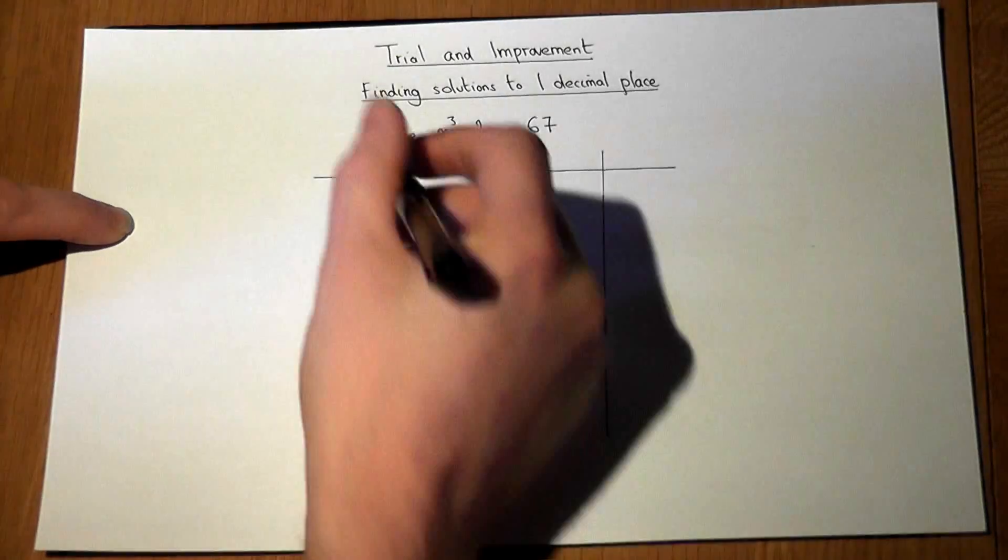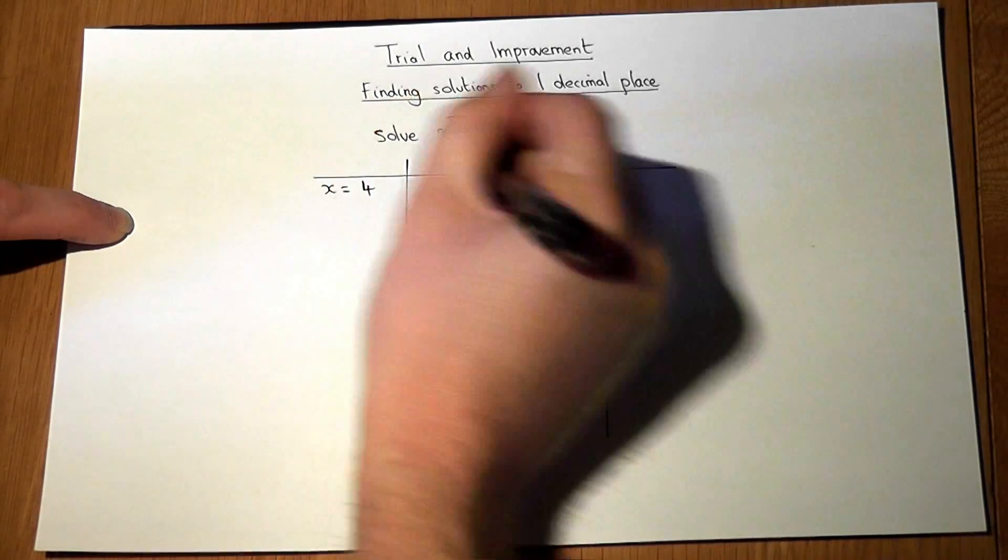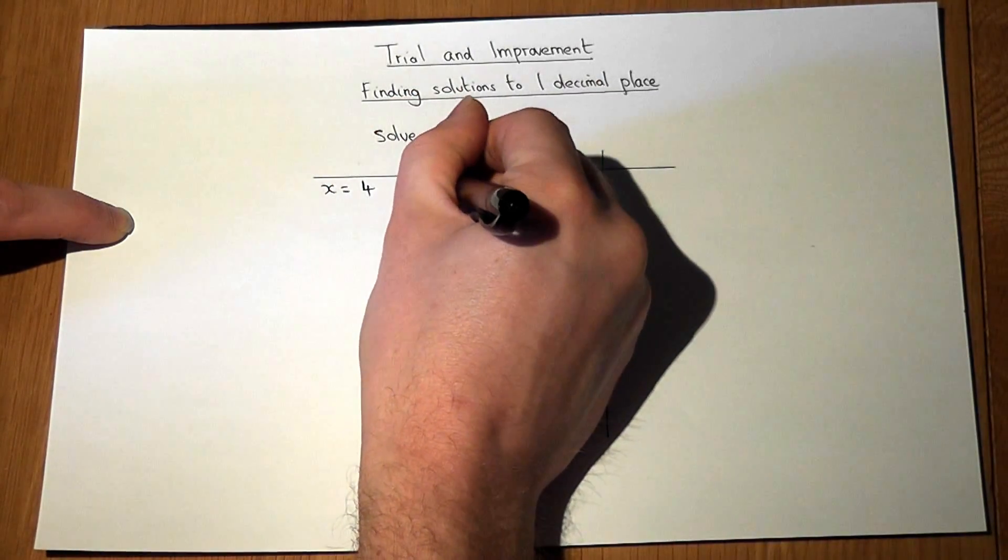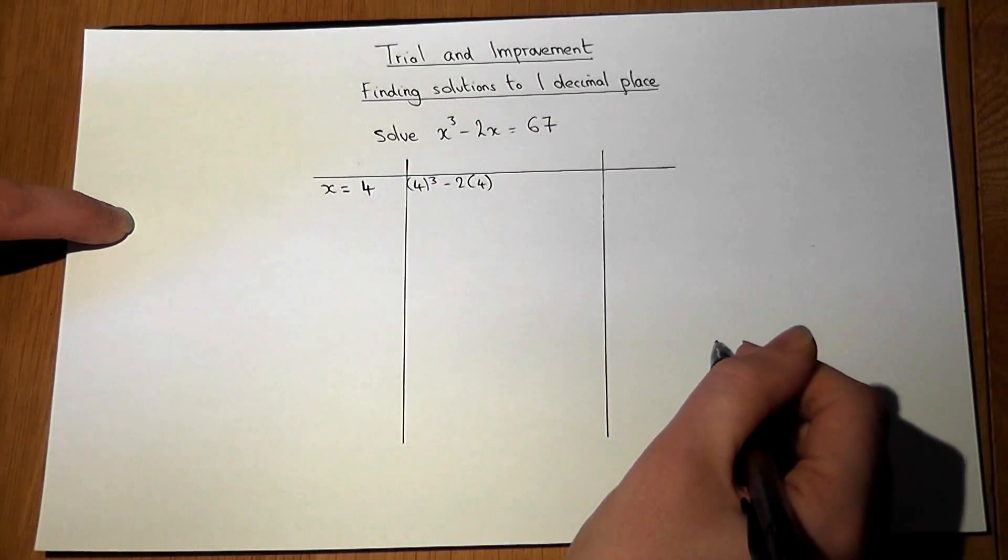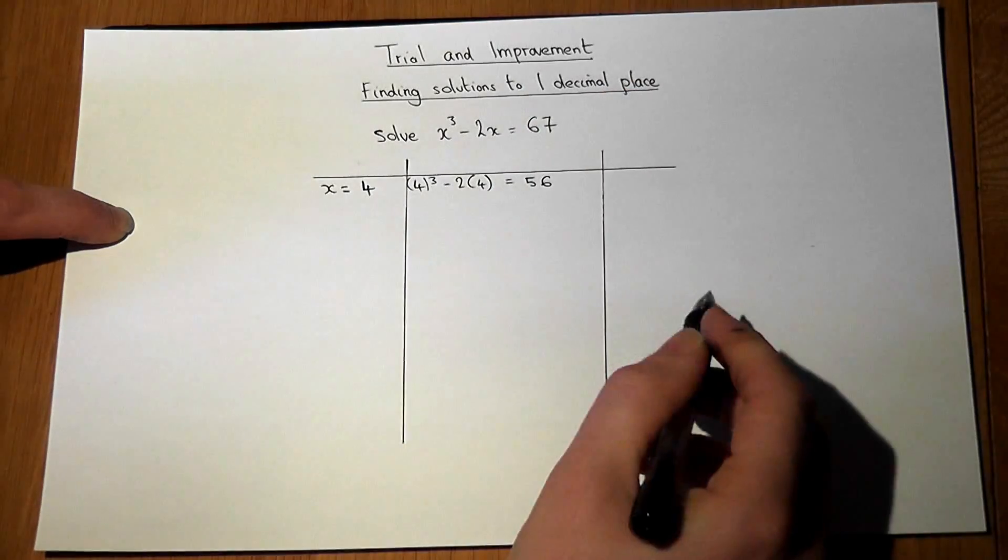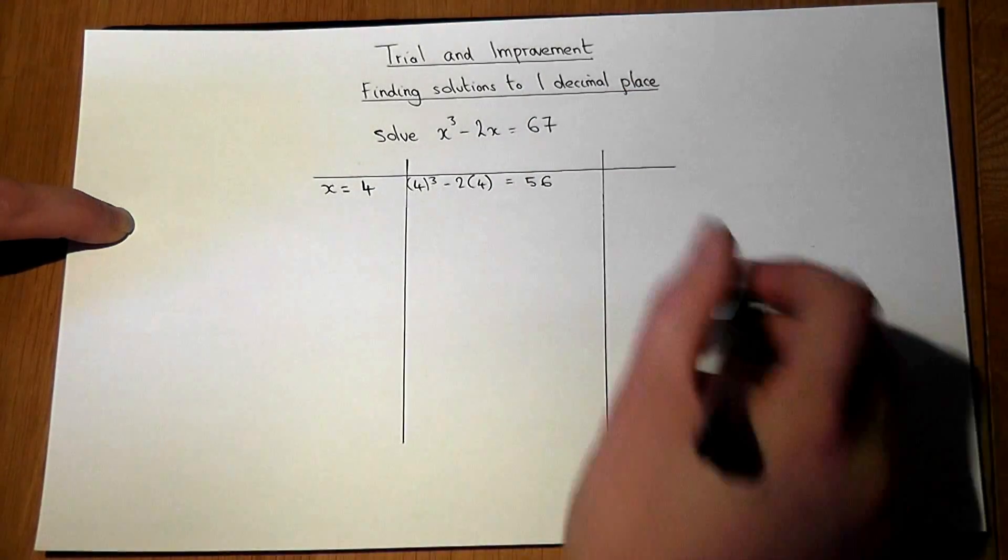Normally, let's start off by giving you a hint, such as x equals 4. And if we work out what 4 cubed take away 2 times 4 equals, then we get to 56. So this value compared to 67 is too low.